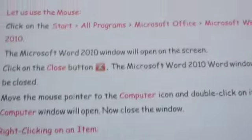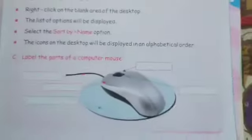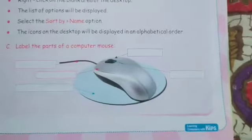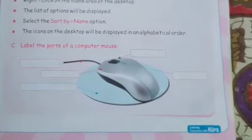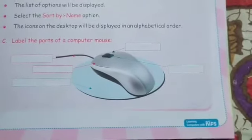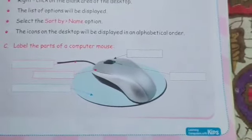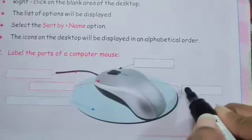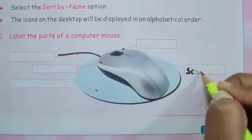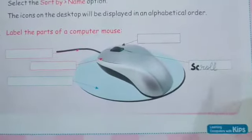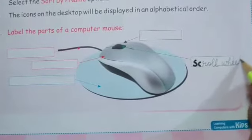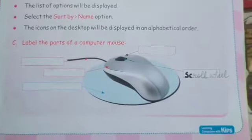After that, lab activity is given in your book on page number 35. In part C, all of you look at part C — label the parts of a computer mouse. This one is the scroll wheel: S-C-R-O-L-L, scroll. W-H-E-E-L, wheel. Scroll wheel.